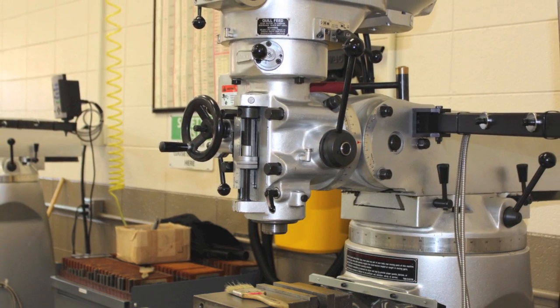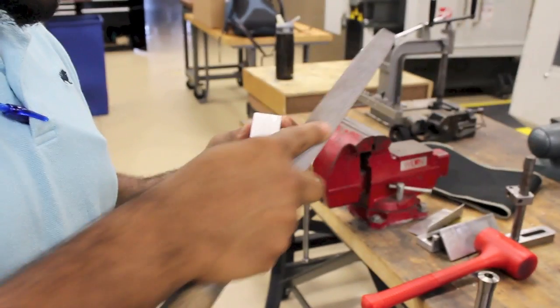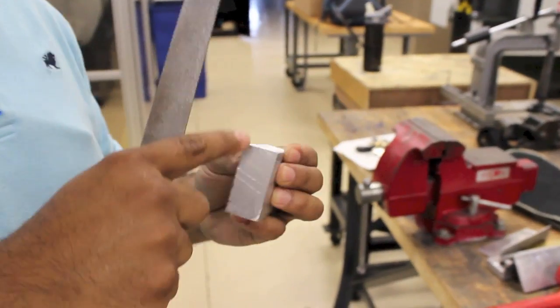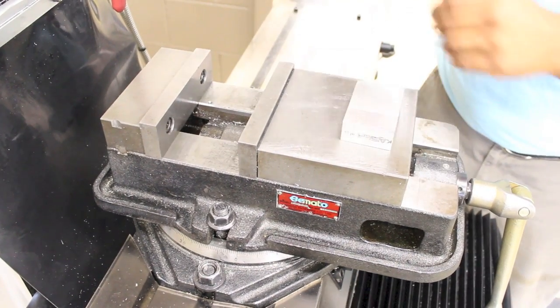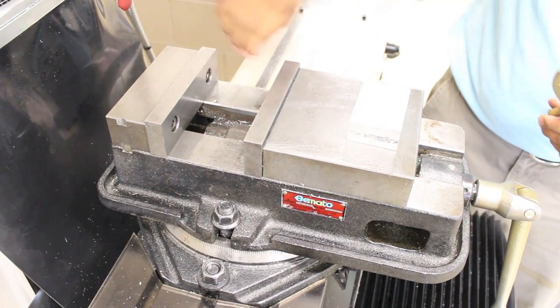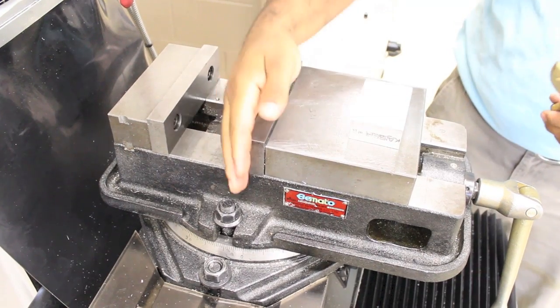The first step in the process is to indicate the mill head to assure that it and the vise are square. Debur the stock. Burrs are the enemy of squareness. Be sure that all burrs are removed and that any chips and dust are removed.